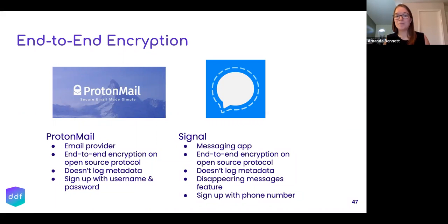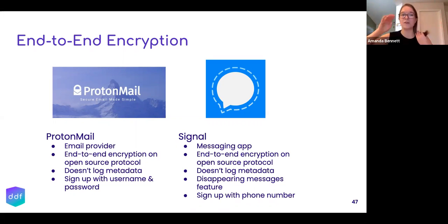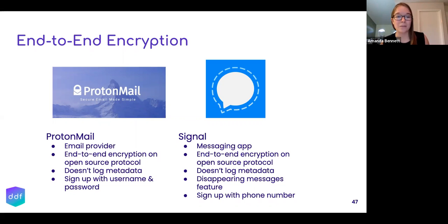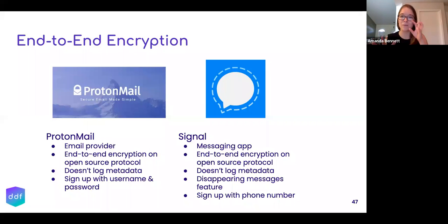Signal is an end-to-end encrypted messaging app that has become super popular. It's also open source, as is ProtonMail — open source means anyone can look up the code and software engineers can actually verify how these systems work. They both care about privacy and don't log metadata. Signal has a disappearing message feature. With Signal, you sign up with your phone number and the encryption key is generated and stored on your phone — so you don't have a separate password to remember. They use technology on your phone so that only your phone can decrypt that message, and only the phone of the person you're sending it to can read it.